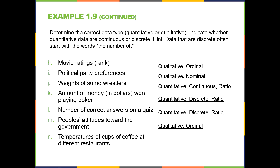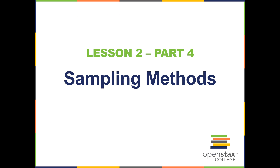Temperatures of cups of coffee at different restaurants. They are quantities that are measured, so it's continuous and quantitative. And since there is no natural zero — you could never have a cup of coffee with zero amount of temperature, there's always going to be some temperature present — that is quantitative, continuous, and interval. That concludes the lesson.